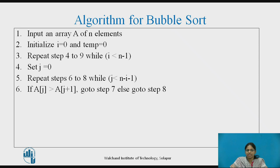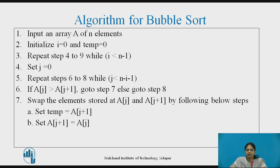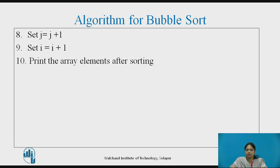Check if A[j] is greater than A[j+1]. If so, go to step 7; else go to step 8. For swapping, use a temporary variable: set temp to A[j+1], then A[j+1] to A[j], and A[j] to temp. After that, increment j by 1. Then increment i by 1. After coming out of both loops, print the sorted array elements.